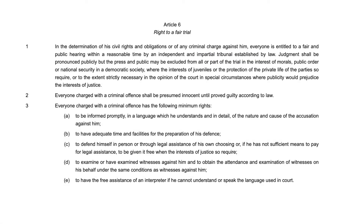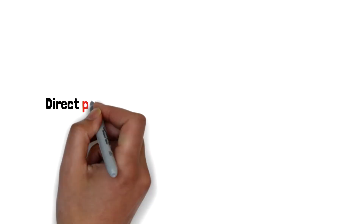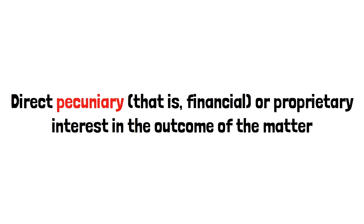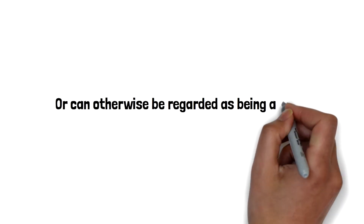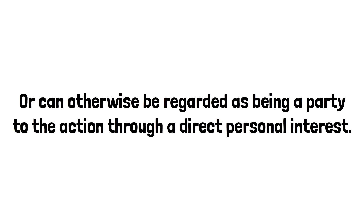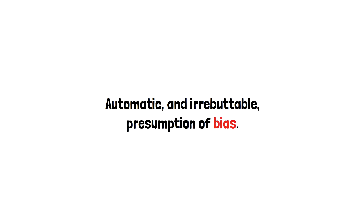In cases where an issue of bias is raised, the court will ask whether there was actual or apparent bias. Actual bias is where a judge has either a direct pecuniary — that is, financial — or proprietary interest in the outcome of the matter, or can otherwise be regarded as being a party to the action through a direct personal interest. An obvious example would be that the judge would be paid for a particular outcome of the case. In such a matter there is an automatic and irrebuttable presumption of bias, and the decision would be held to be unlawful.